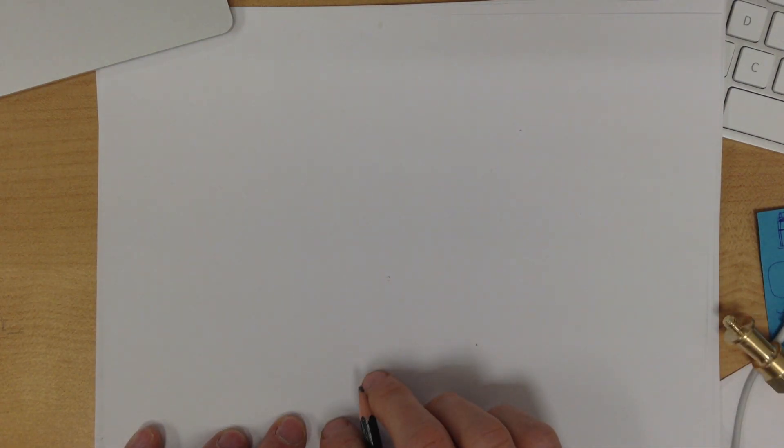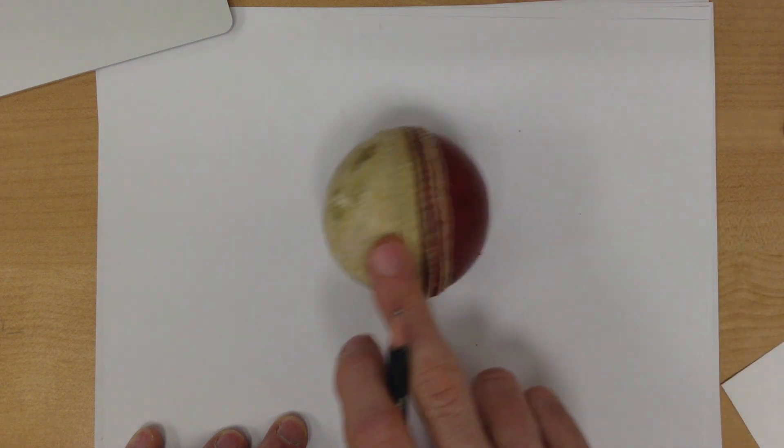All right, so here's a little bit of help for the problem where—this is a cricket ball, very strange cricket ball, found this at Oxford.